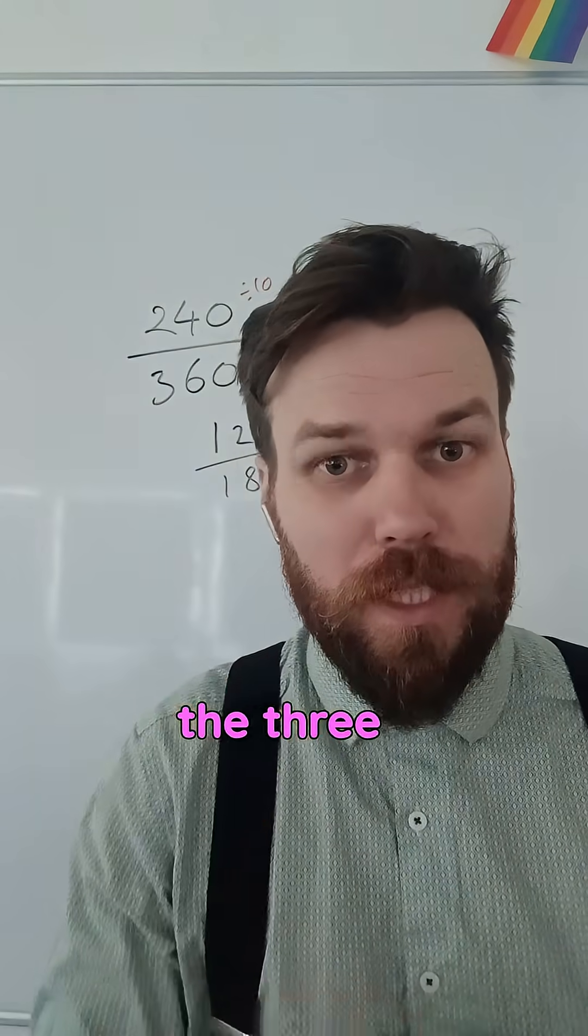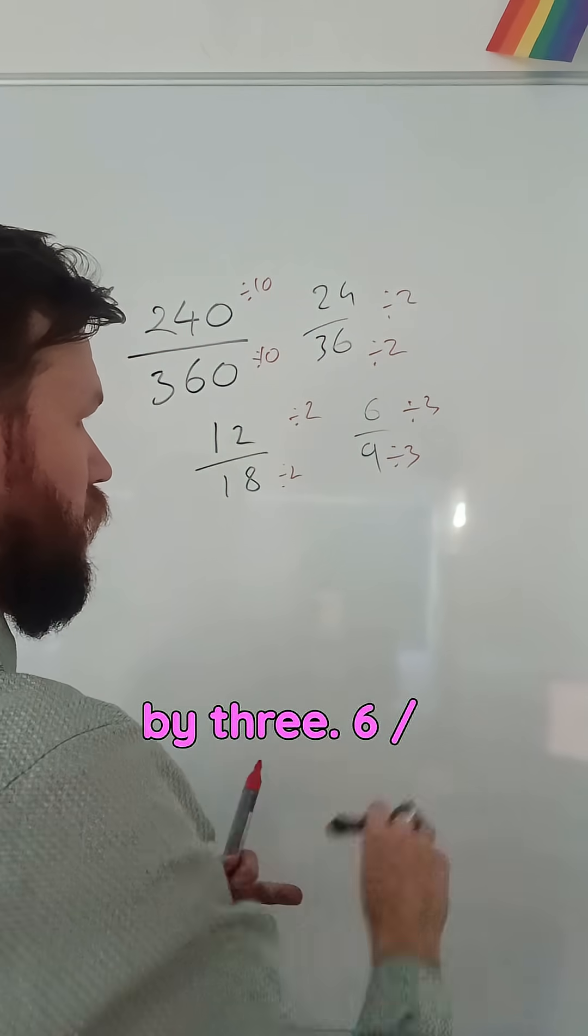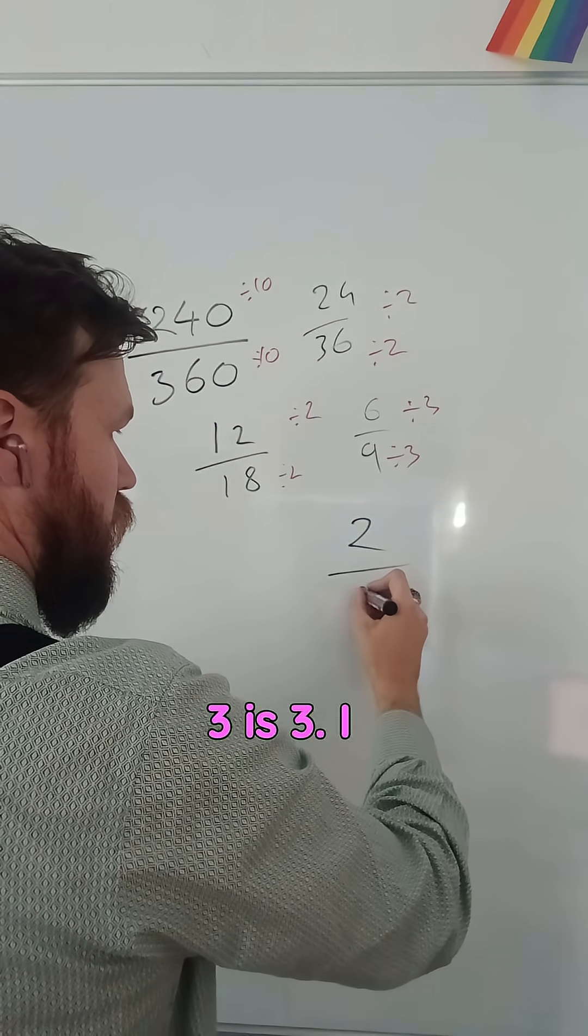Oh wait! The 3 times table, I saw both of them are in. I'm going to divide by 3, divide by 3. 6 divided by 3 is 2, and 9 divided by 3 is 3.